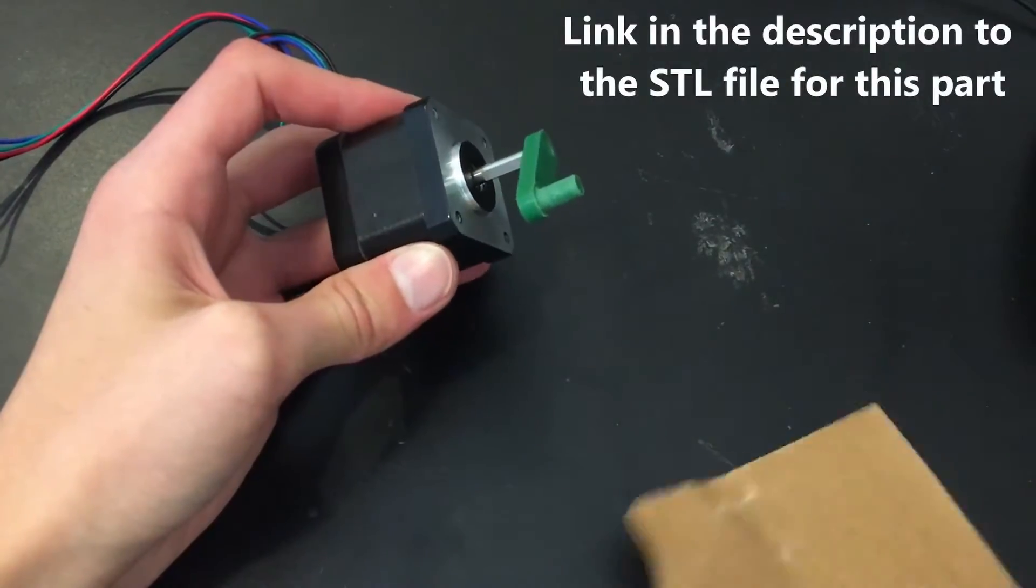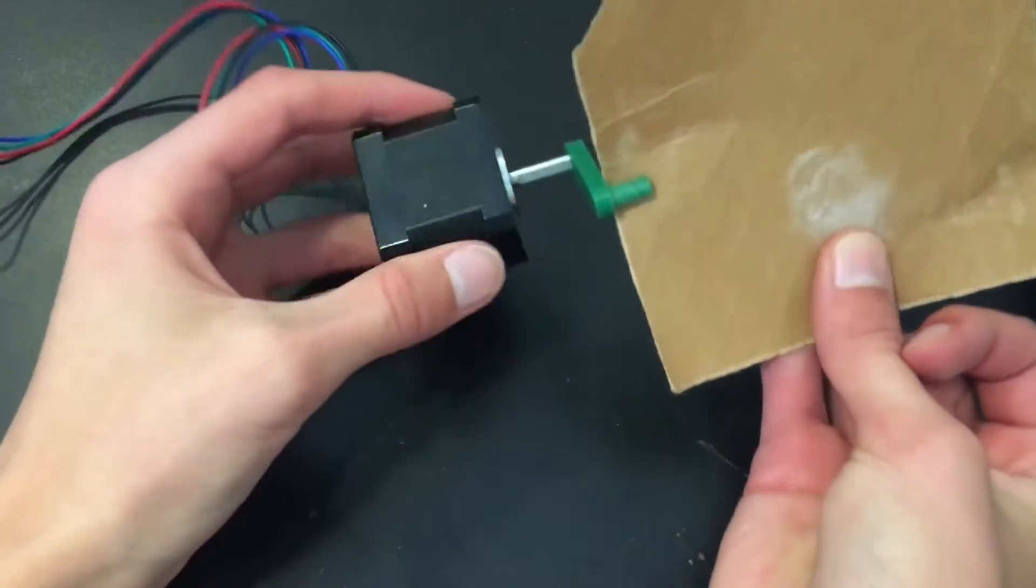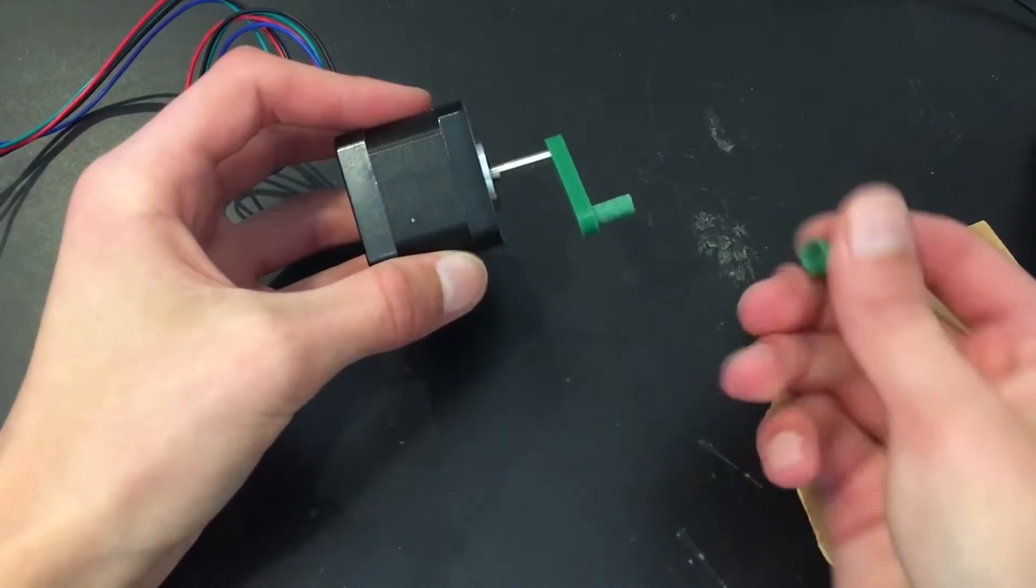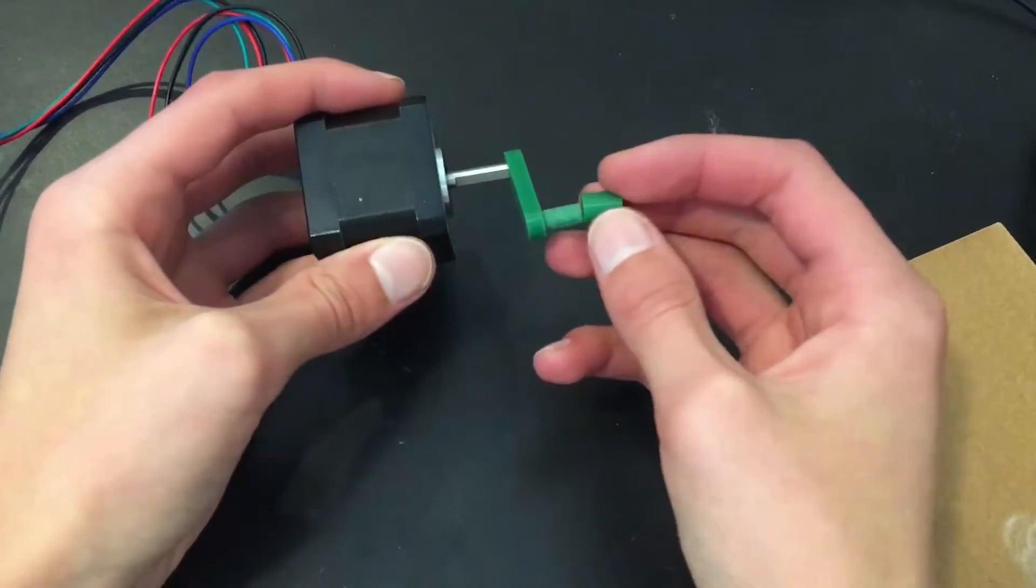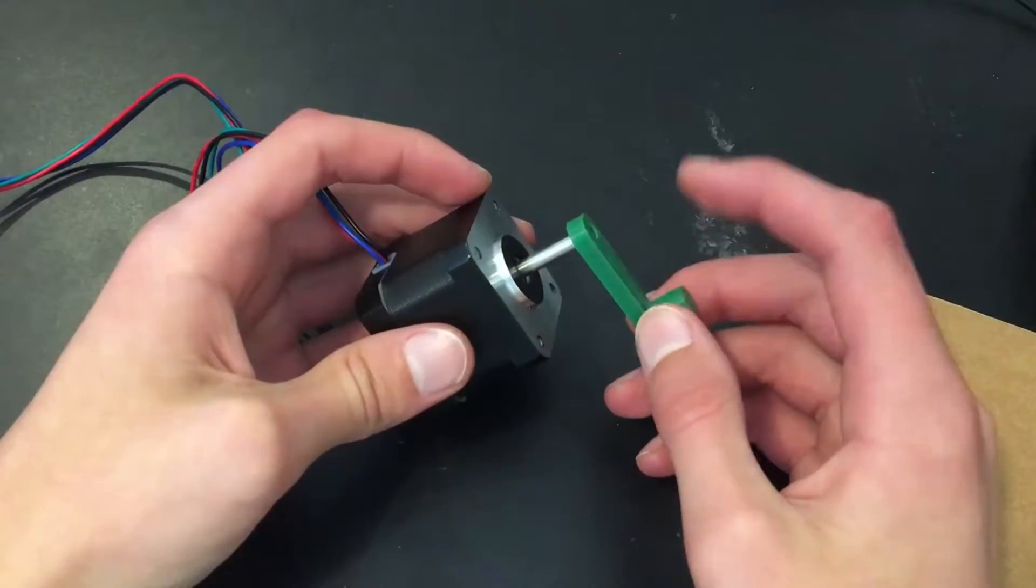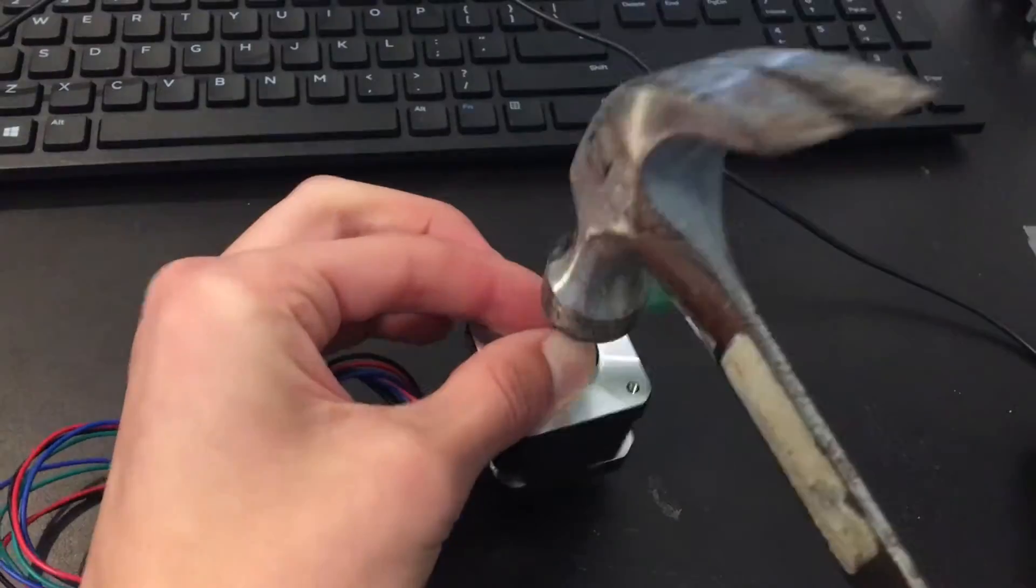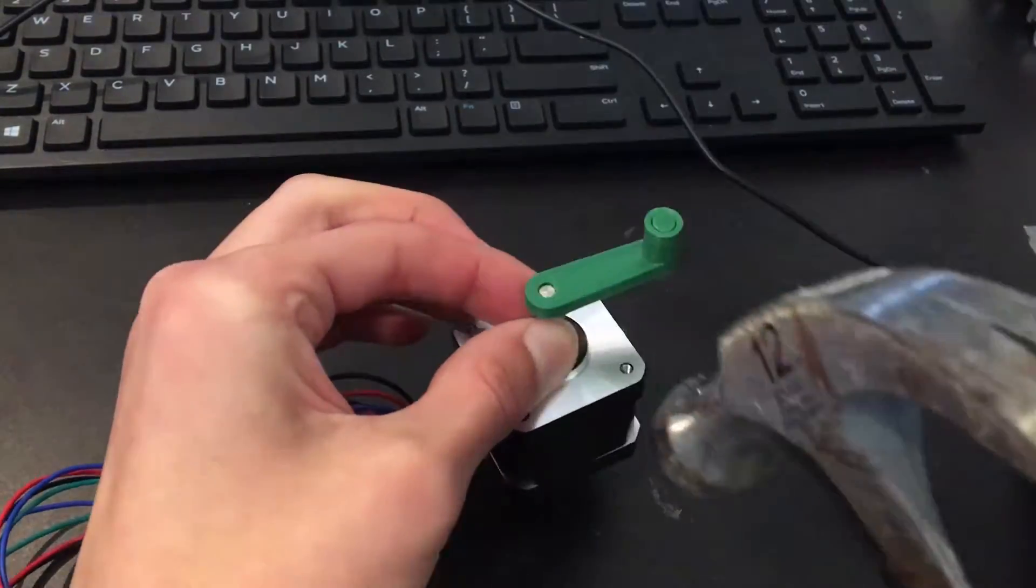All I had to do was sand down this arm piece and sand a little bit on the inside of this piece, and they slide pretty smoothly. I then hammered the arm onto the motor shaft, and it's finished.